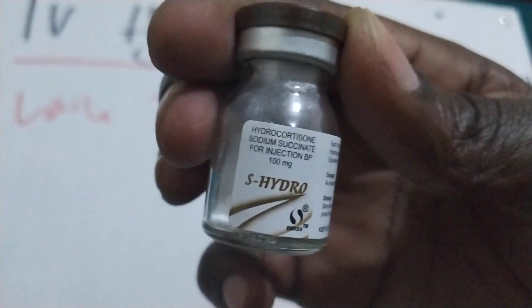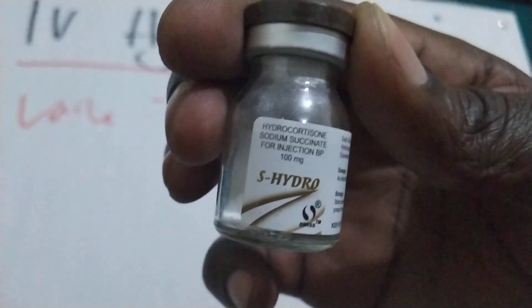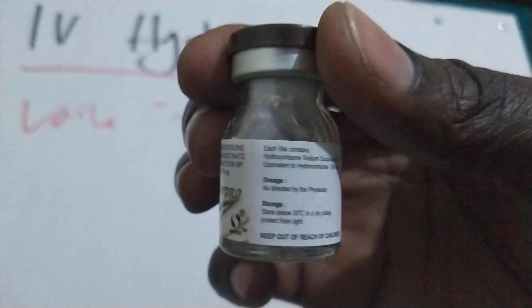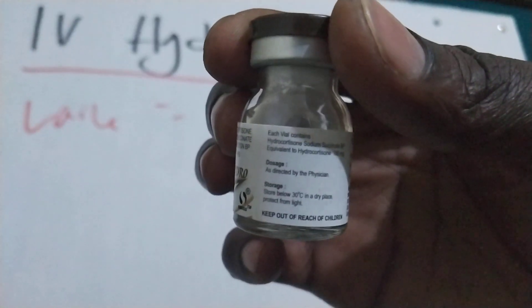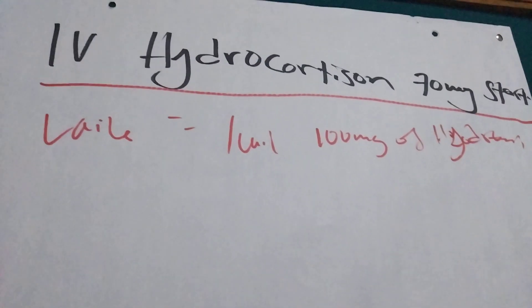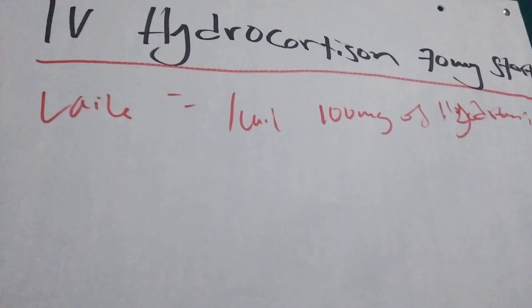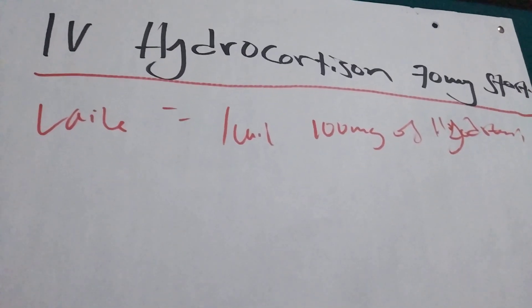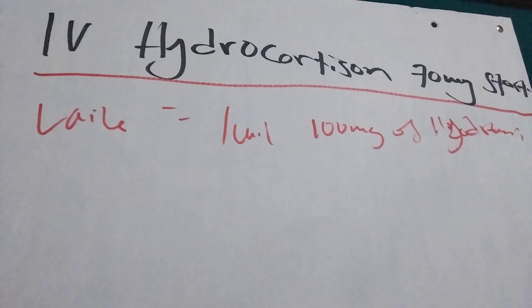So this is hydrocortisone 100mg in one vial as you can see. I am going to show you how we can dilute it for children and for adults also. So let's start.